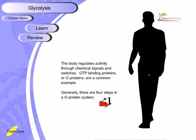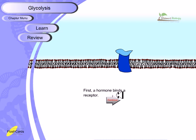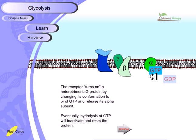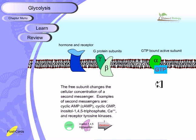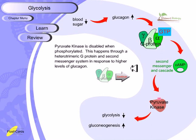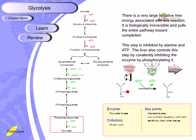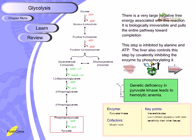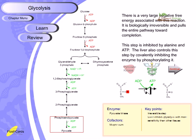The G-protein mechanism: the hormone binds to the receptor, which activates the trimeric G-protein (α, β, γ subunits). The GTP is hydrolyzed, the alpha subunit separates, and this alpha subunit interacts with adenylyl cyclase to produce cyclic AMP from ATP. A genetic deficiency in pyruvate kinase leads to hemolytic anemia, as patients cannot produce sufficient red blood cells and hemolysis occurs.